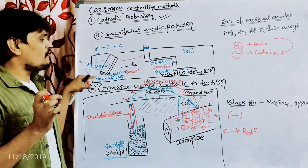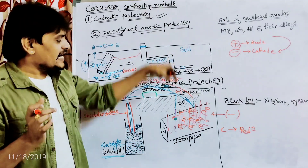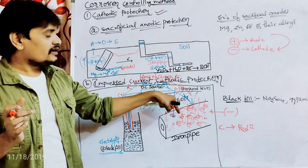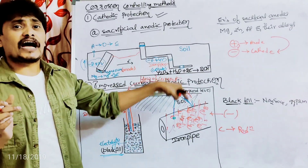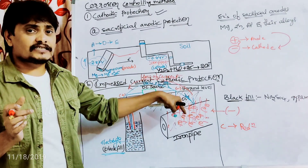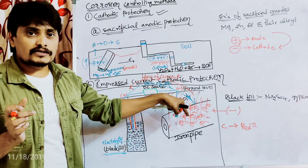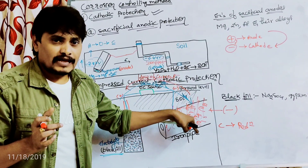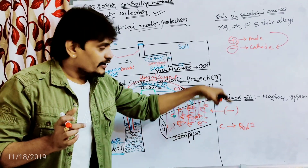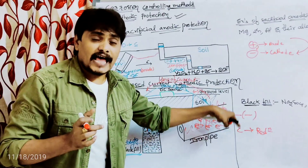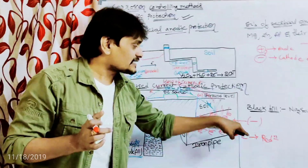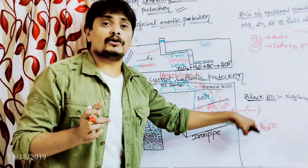The phenomenon is straightforward: as the flow of electrons takes place inside the iron pipe, it becomes enriched with negatively charged electrons, becomes negative, and since the negative electrode is the cathode, instead of acting as an anode and undergoing oxidation (corrosion), it now acts as a cathode and undergoes reduction.